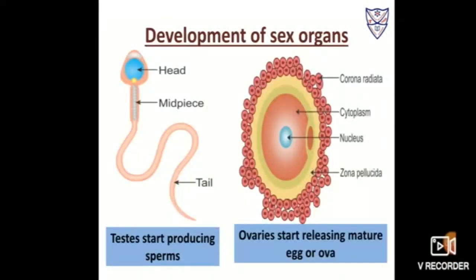Development of sex organs: in males, the testes start producing sperms, and in girls, the ovaries start releasing mature eggs or ova. All of this happens during the period of adolescence.